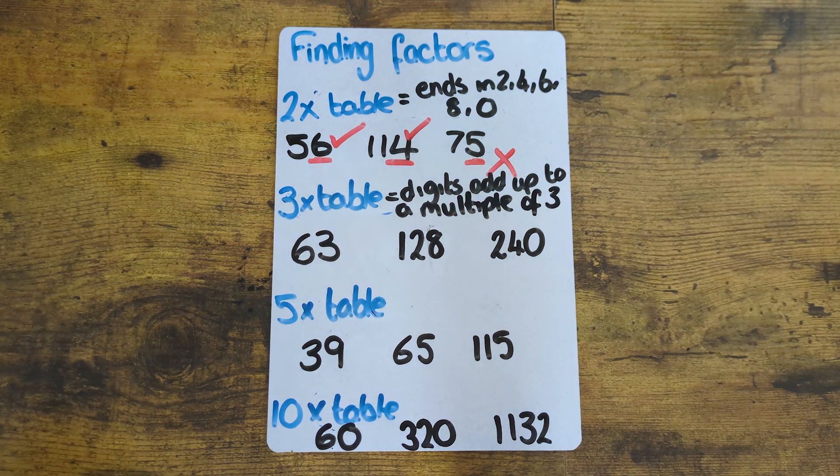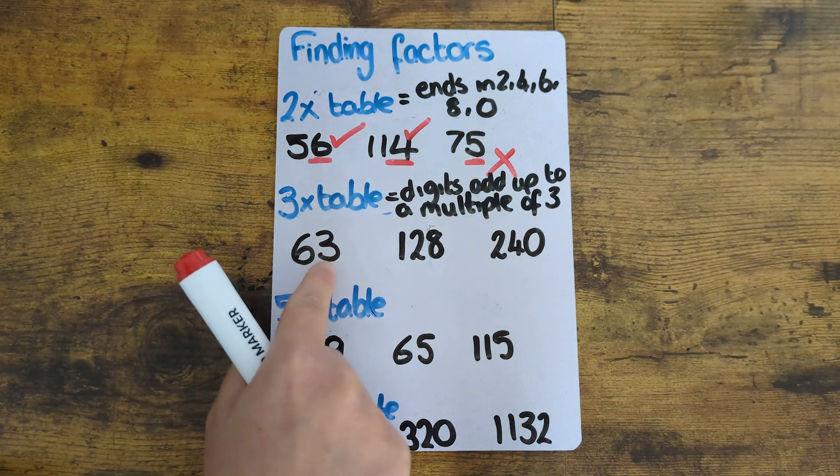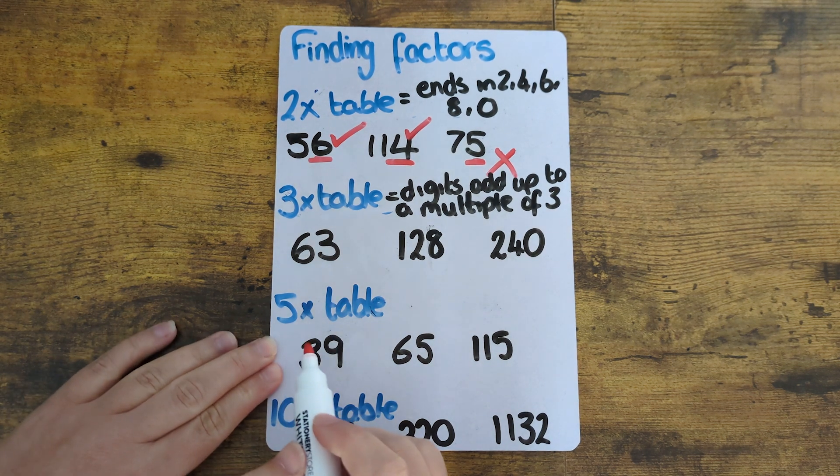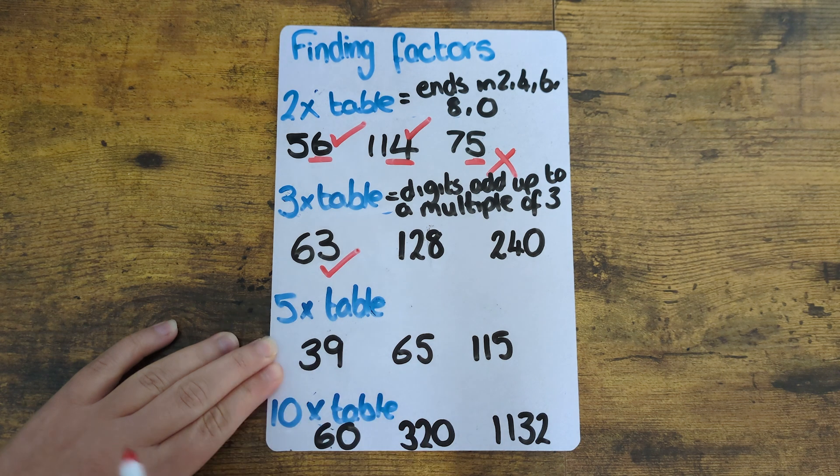So first of all 63. Six plus three is nine. Nine is a multiple of three it's in the three times table so therefore 63 will be in the three times table as well.